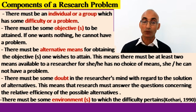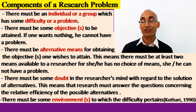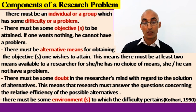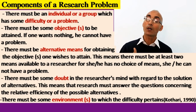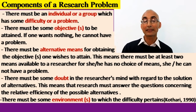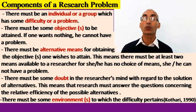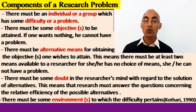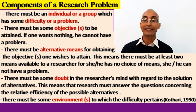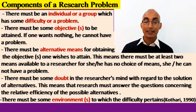Second, there must be some objectives to be obtained, because if someone wants nothing, there will be no problem and no research at all. Certain objectives also lead us to encounter a problem and conduct an investigation. Third, there must be alternative means for obtaining the objectives one wishes to attain — there must be at least two means available to a researcher, for if he has no choice of means, he cannot have a problem.